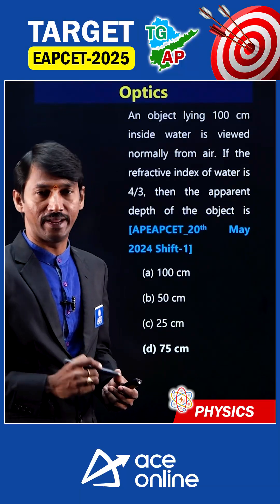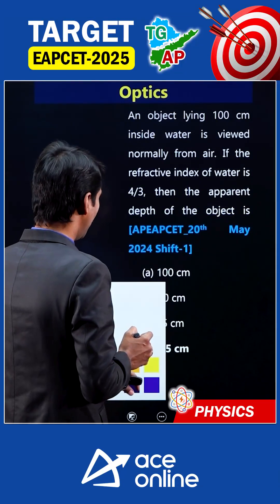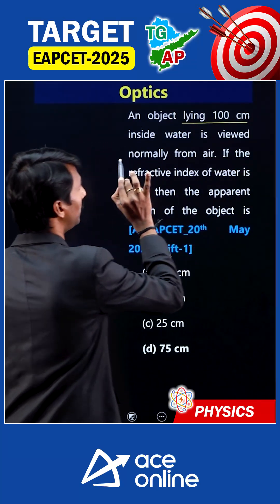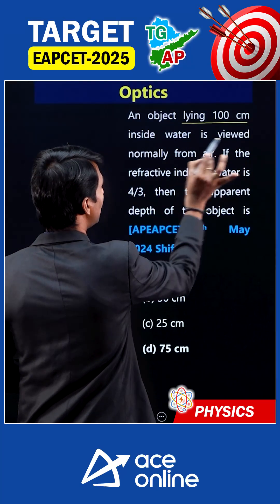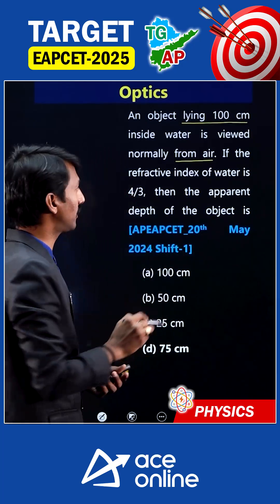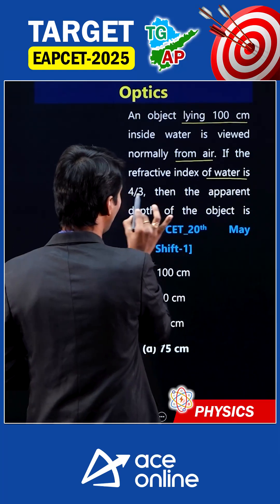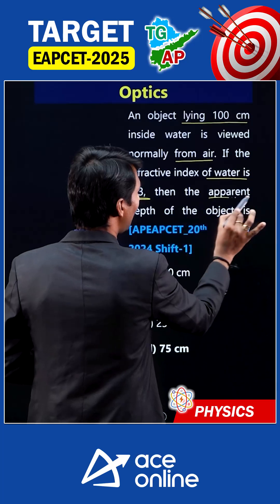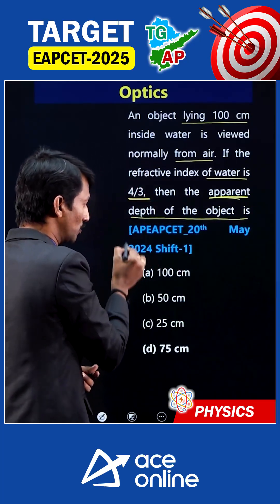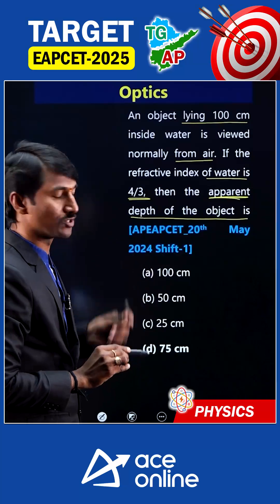Welcome to AS Engineering Academy and AS Online. In the question, an object lying 100 cm inside the water is viewed normally from the air. If the refractive index of water is 4 by 3, then the apparent depth of the object is to be found. This is a 2024 EAPZ question.